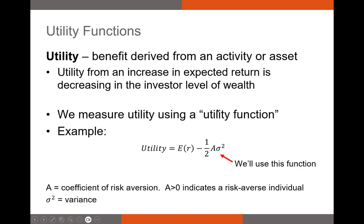When we talk about utility in investments, we try to build a utility function that measures your utility. The one you're seeing right now is advocated for by the CFA Institute. It says that your utility from investing is equal to your expected return on your investments minus one half times your coefficient of risk aversion times the variance of your portfolio. The higher your return, the more utility you get. The greater your risk — proxied by the variance — the less utility you get. And your coefficient of risk aversion amplifies this negative effect from taking risk.